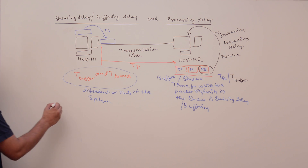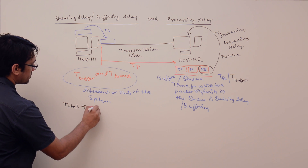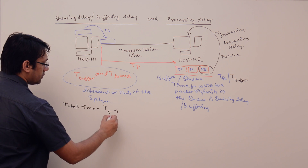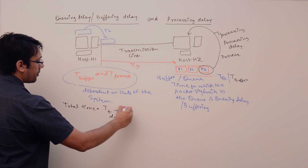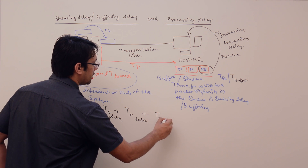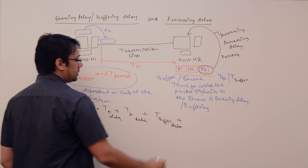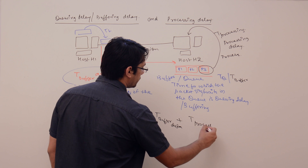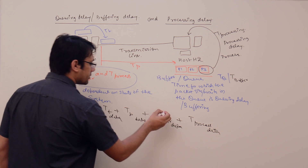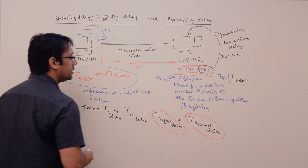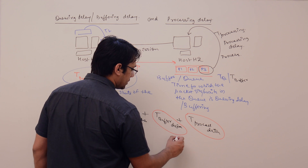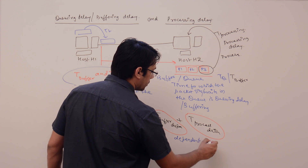When we discuss the total time for this communication, the total time is: transmission delay plus propagation delay plus queuing delay (buffering delay) plus processing delay for the data packet. However, the buffering delay and processing delay cannot be predicted because they are dependent on the state of the system.